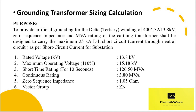The MV winding of the 400/130/13.8 kV transformer zero sequence impedance, and the MV rating of the earthing transformer shall be designed to carry the maximum 25 kA line-to-ground short circuit current through the neutral circuit, as per the short circuit current for the substation. Zigzag transformer parameters are tabulated here.